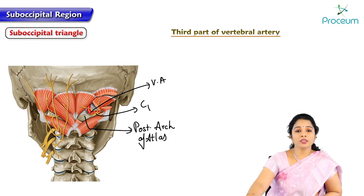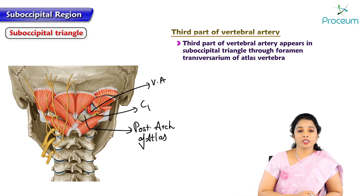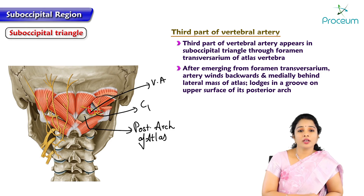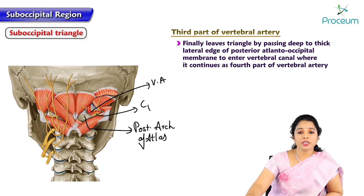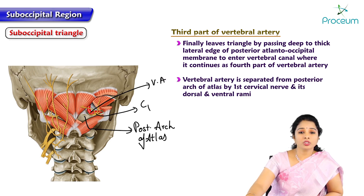The third part of the vertebral artery appears in the suboccipital region through the foramen transversarium of the atlas vertebra, reaching the triangle through it. After emerging from the foramen transversarium, the artery winds backwards and medially behind the lateral mass of atlas and lodges in a groove on the upper surface of the posterior arch of atlas. It finally leaves the triangle by passing deep to the thick lateral edge of the posterior atlanto-occipital membrane to enter the vertebral canal, where it continues as the fourth part of the vertebral artery. The vertebral artery is separated from the posterior arch of atlas by C1 nerve — the first cervical nerve or suboccipital nerve — and its dorsal and ventral rami.